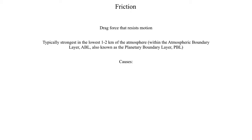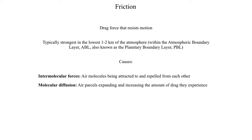We'll also explore some causes of friction, some more relevant than others in meteorology. One is intermolecular forces — things like hydrogen bonds and London dispersion forces, which attract or repel individual molecules from each other. Another cause is molecular diffusion: as air parcels expand, they encounter more drag, which tends to slow them down and create a larger force of friction. These are mostly at the molecular or microscopic level, so we usually don't worry about them because they're very difficult to quantify and observe, making it hard to match theory to observation.